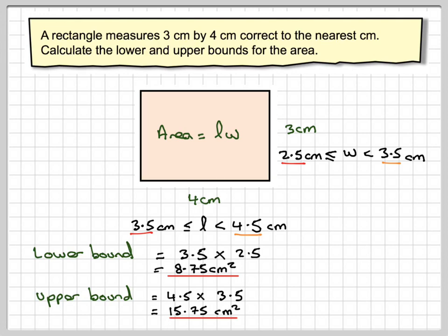So the area, if I measure these lengths correct to the nearest centimetre, can be anything from 8.75cm squared to 15.75cm squared.